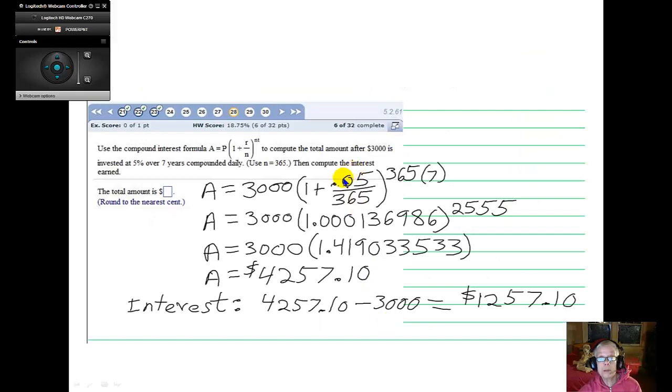Now this is a two-part problem. Problem number 28 in your homework. Use the compound interest formula, A equals P times 1 plus R over N, raised to the Nt power, to compute the total amount after $3,000 is invested at 5% interest over 7 years, compounded daily, every day, and we're being told to let N equal 365. Then compute the interest earned.